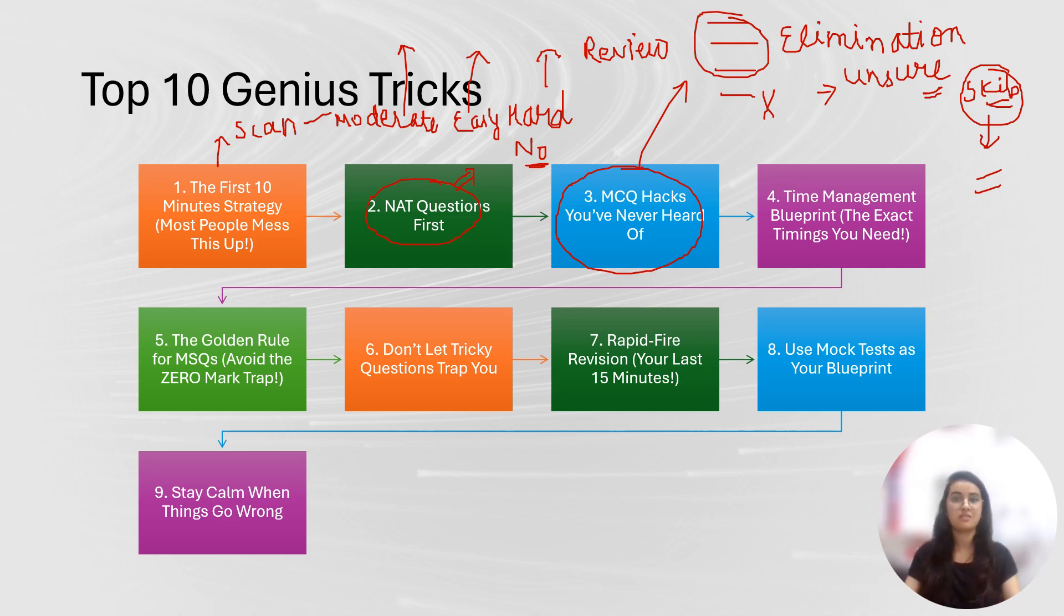Whenever you are unsure, just skip it. Try to narrow down your options to two and make an educated guess, but don't take risk on more than three or four questions because even 0.5 marks can change your rank. The MCQ portion is actually the most important portion where you must pay attention and you should choose strategically which questions you want to solve and which you are going to skip. Learn the art of skipping questions.